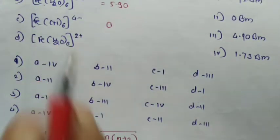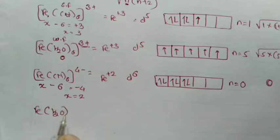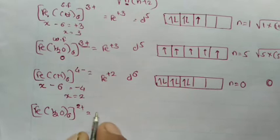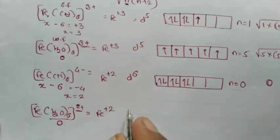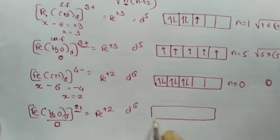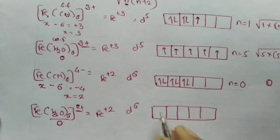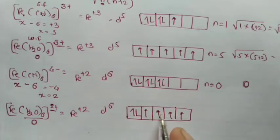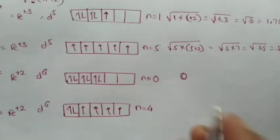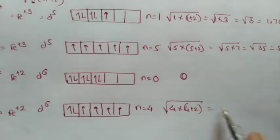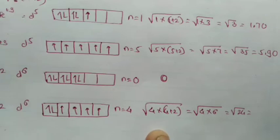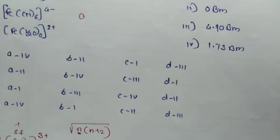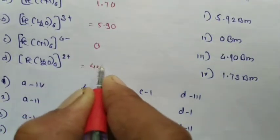Last complex: Fe(H₂O)₆²⁺. Water is neutral, so oxidation state of iron is plus 2, giving 6 electrons in the d orbit. Water is a weak field ligand, so 6 electrons fill singly then pair: 1, 2, 3, 4, 5, 6. Number of unpaired electrons is 4. Calculating: square root of 4×6 = square root of 24 = 4.90 BM.